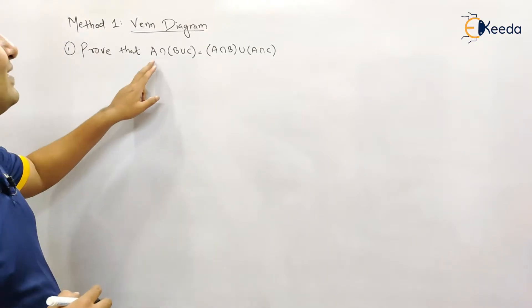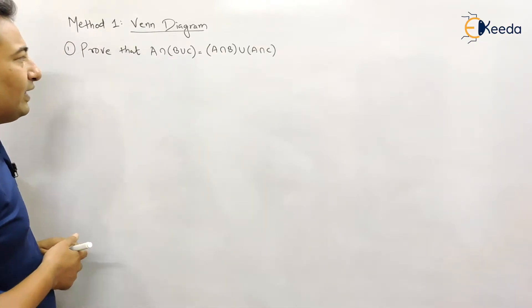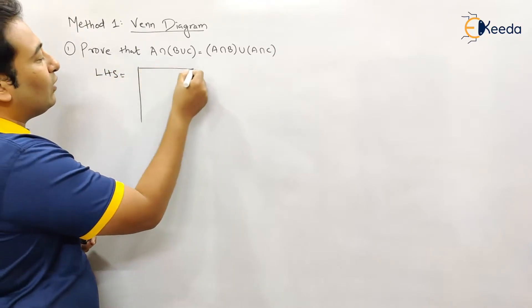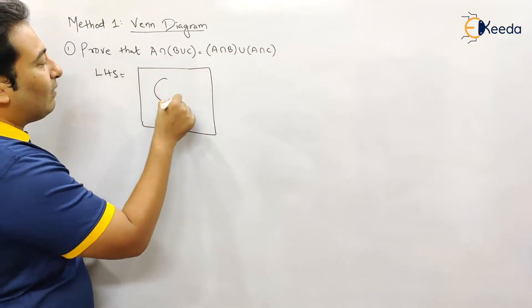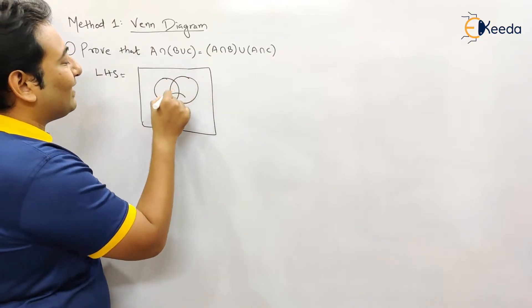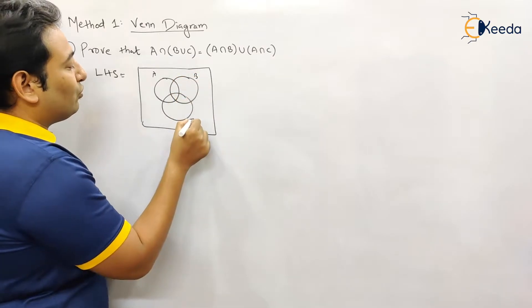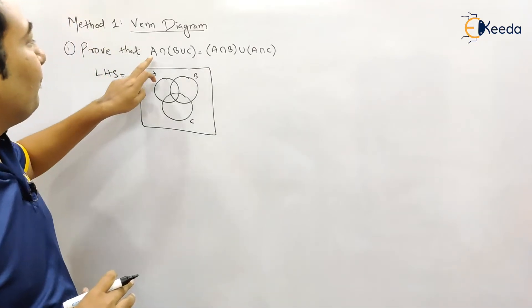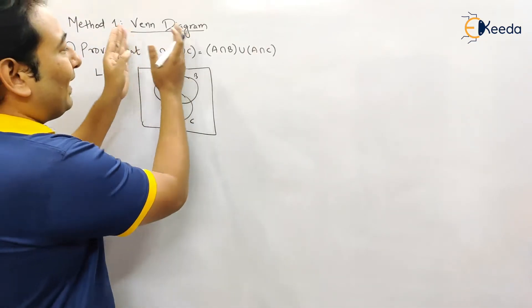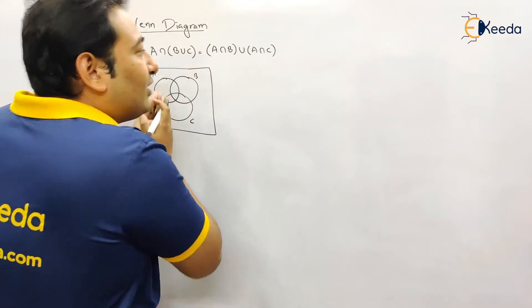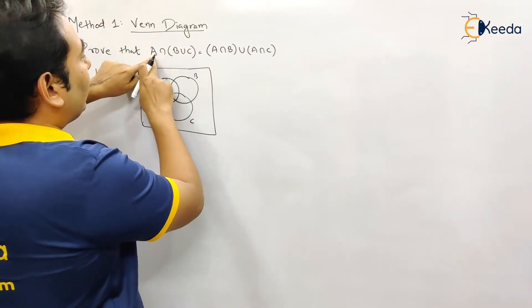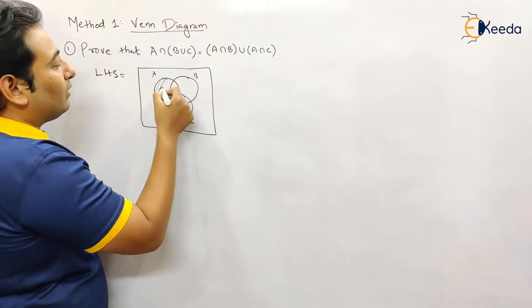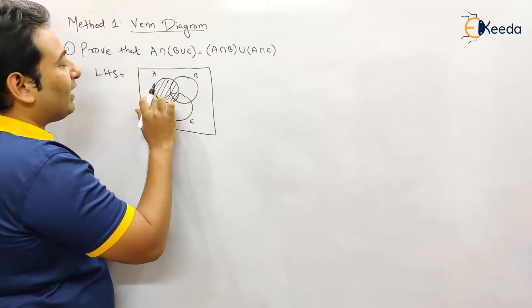First of all, there are three sets A, B and C. Therefore, let us prove LHS. Since there are three sets, in all the boxes of the Venn Diagram I will be having three sets A, B, C. See the way I am solving the problem. For LHS, let us break this problem. Here there is one element A. So let's shade A. This is my A.